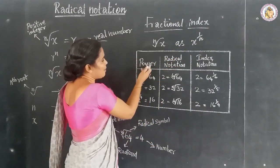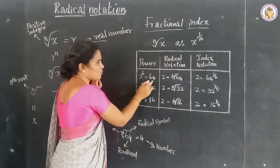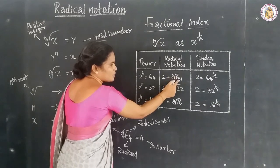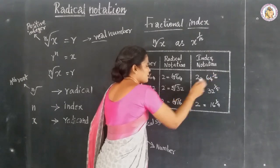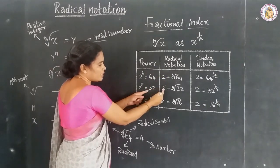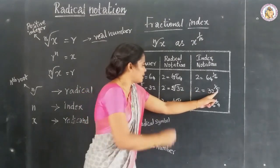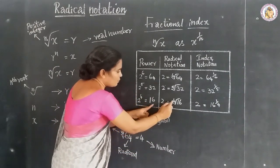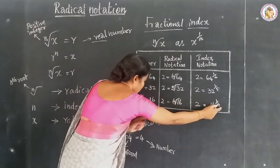Using this tabular column showing power, radical notation, and index notation: 2 to the power of 6 is equal to 64. In radical notation, 2 equals the 6th root of 64, and in index notation, 2 equals 64 to the power of 1 by 6. Similarly, 2 to the power of 5 equals 32, written as 2 equals the 5th root of 32, and 2 equals 32 to the power of 1 by 5. Then 2 to the power of 4 equals 16, giving 2 equals the 4th root of 16, and 2 equals 16 to the power of 1 by 4.